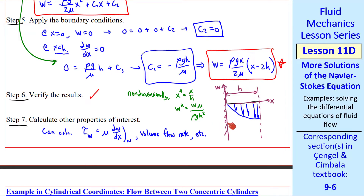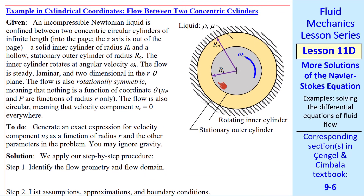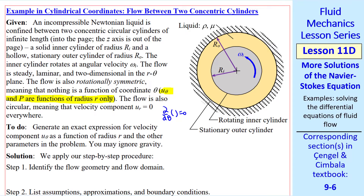Note that w is negative everywhere, in the direction of the gravity vector. Now I'll do an example in cylindrical coordinates: the flow between two concentric cylinders — an inner one of radius r_i and an outer one of radius r_0. The fluid is a liquid with rho and mu. The inner cylinder rotates at angular velocity omega_i, and the outer cylinder is stationary. The flow is infinite into the page. We make the usual assumptions of steady, laminar, two-dimensional, Newtonian flow in the r-theta plane. This flow is rotationally symmetric, so del/del-theta of anything is zero, and u_theta and pressure are functions of radius only. We also assume u_r equals zero everywhere — there is only tangential flow, u_theta.